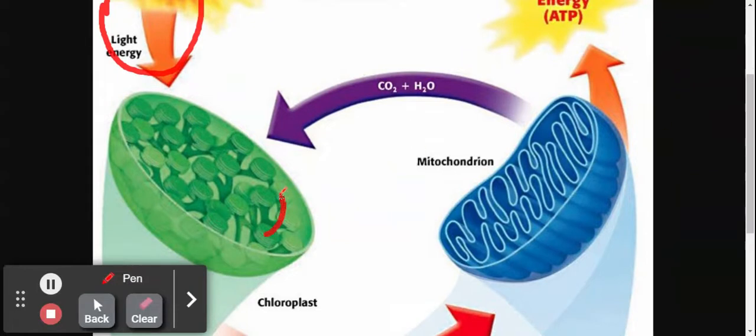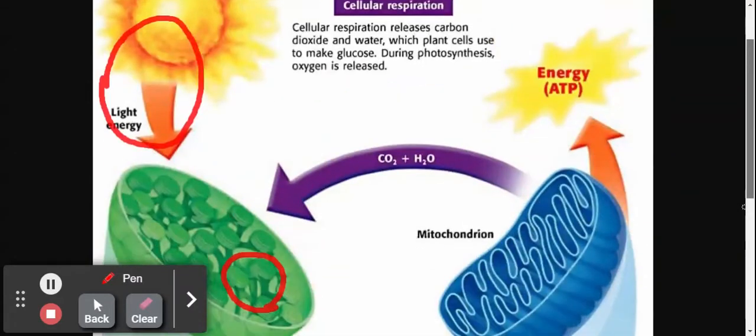So let's look at this plant cell right here. Inside the plant cell we have these little green chloroplasts. Chloroplasts is where photosynthesis occurs in the plant cell. So again, the beautiful relationship that we have here is plant cells take in carbon dioxide and water. They use energy from the sun.